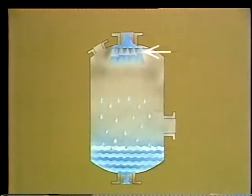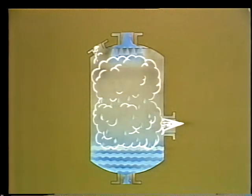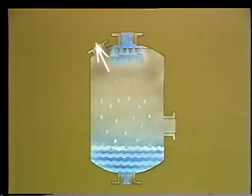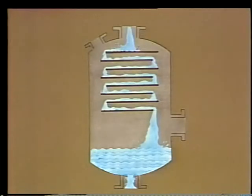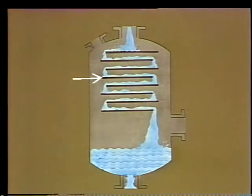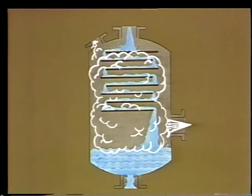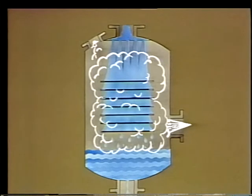A spray de-aerator sprays the incoming feed water down through a steam-filled space where air and gases which can't be condensed are scrubbed away by the live steam. The air and other gases are vented either to open air or to a condenser. In tray de-aerators, the feed water cascades over a set of trays while steam heats it up and strips it of the non-condensable gases. The third type combines both the spray and the tray designs for even greater efficiency and capacity.